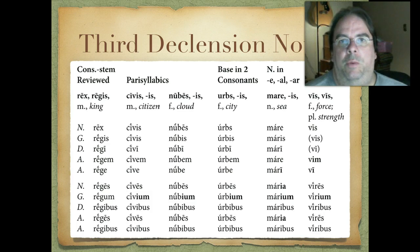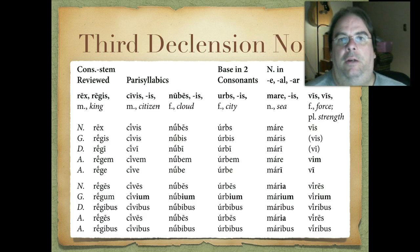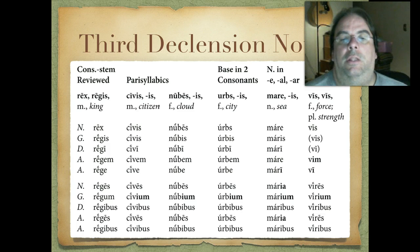Let's look at the neuters where the nominative ends in E, AL, or AR. Like mare, maris — that's neuter, so the nominative, accusative, and vocative look the same. Dative singular is mari, accusative is mare. And then the ablative — here's a difference — mari with an I. Then the plural: maria, marium, maribus, maria, maribus. With the neuters we have a couple of exceptions: I-U-M in the plural, I-A in the plural nominative/accusative, and in the ablative singular we have I instead of E.